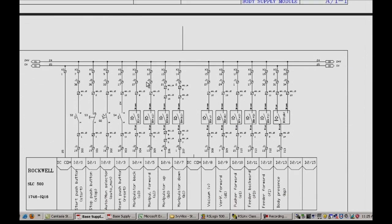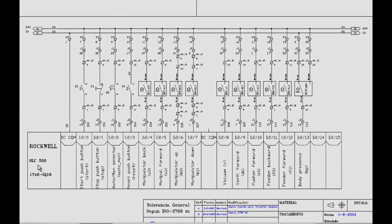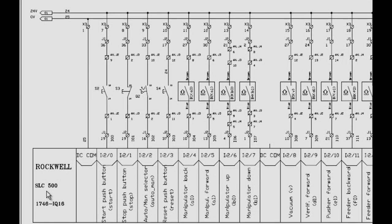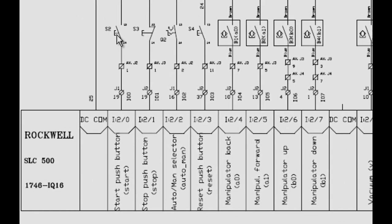The next page is really important — this is our input page. We can see that we've got 24-volt inputs being connected to this station. We've got I:2/0, which is our start push button, indicated by the IEC symbol for a push button. And the next one is our stop push button. We know that one is wired normally closed, so we'll have to take that into consideration when we write our program.